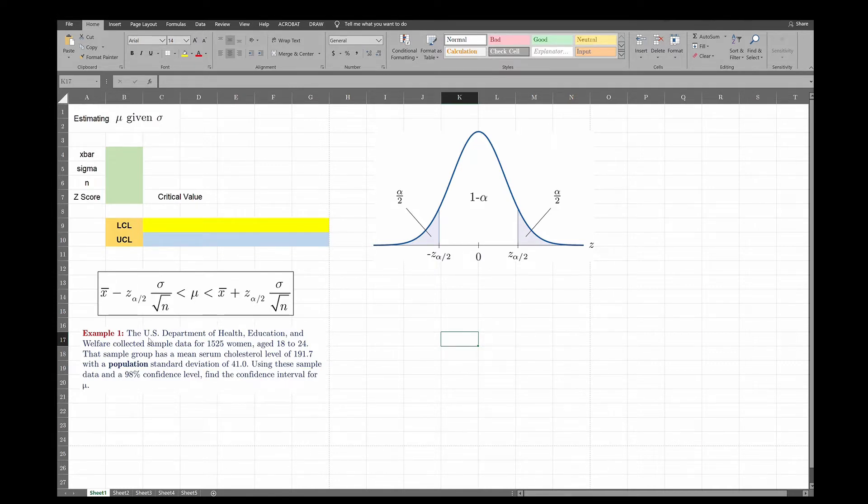I've picked up an example here for you. The US Department of Ed is the first example on our lecture notes. Collected sample data for 1525 women so your sample size is 1525 women. It says the sample had a mean cholesterol level of 191.7 so x bar is 191.7.